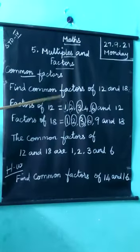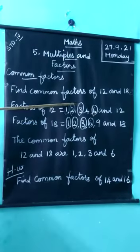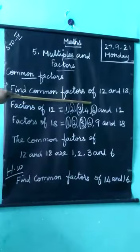We already know the factors of 12. So, factors of 12 equal to 1, 2, 3, 4, 6 and 12.